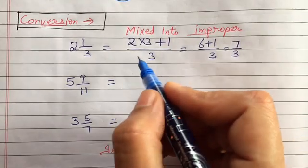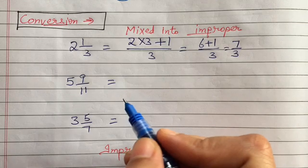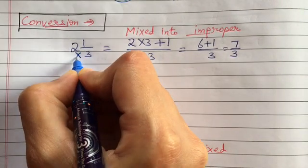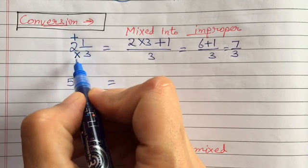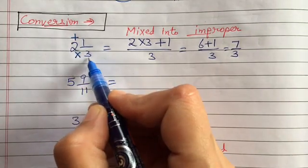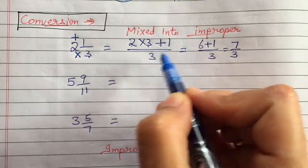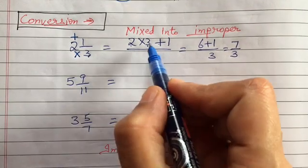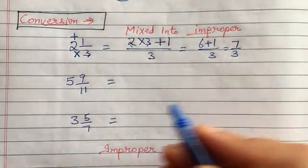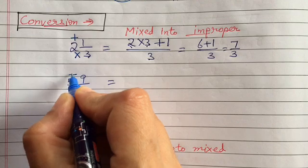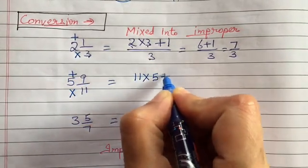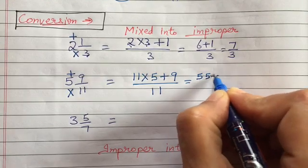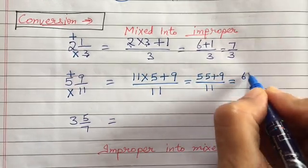Now there are ways of converting. We can convert mixed fraction into improper fraction and vice versa. For example: 2 and 1 by 3. Here we do multiplication and addition. It becomes: 2 multiplied by 3 plus 1, upon 3 — the denominator remains the same. So 3 times 2 is 6 plus 1 is 7, giving 7 by 3. Another example: 5 and 9 by 11 — it becomes 11 multiplied by 5 plus 9 upon 11, which is 55 plus 9 upon 11, so 64 upon 11, which is an improper fraction.